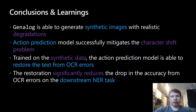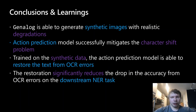To conclude, these are the learnings and takeaways from this project. First, Genalog is able to generate synthetic images with realistic degradations. It's very flexible, easily configurable, and provides several templates out of the box. If you deal with noisy or user-generated text, Genalog can really help you — check it out, it's open source and free to use. Next, our action prediction model successfully mitigates the character shift problem by design. Trained on data generated by Genalog, it is able to restore text from OCR errors on different levels of degradation, from very light to very heavy. Finally, we showed that this approach significantly reduces the drop in accuracy on the downstream task of NER caused by OCR engine noise. Although we experimented only with NER, the proposed method is very flexible and can be applied to any downstream task.